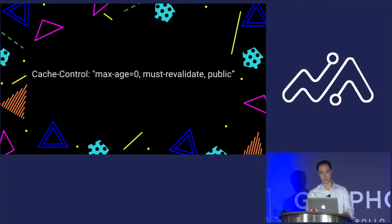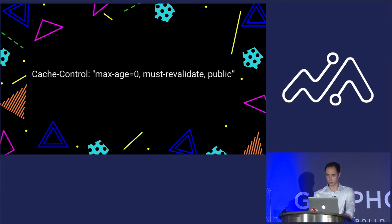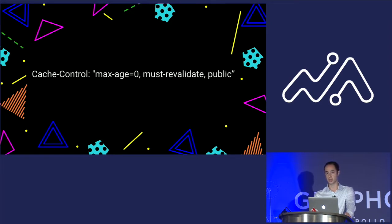Another interesting combination is max-age zero and must-revalidate. That says that every time the data is requested, the server sends a special request to see if the data is still usable before it returns the cached result. Public versus private just marks it as able to be cached in a CDN layer or some public data structure. This is the exact cache-but-revalidate header that Netlify uses to ensure fresh content on every deploy.